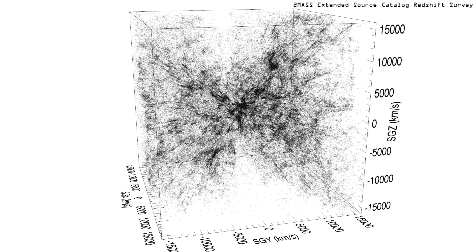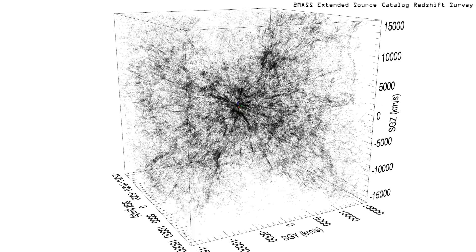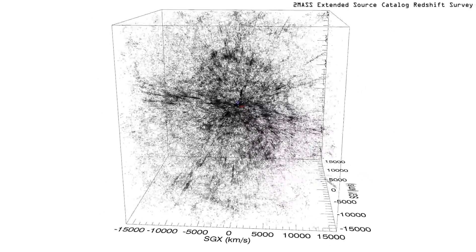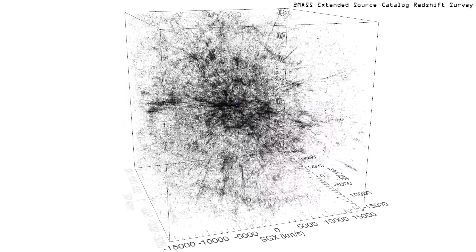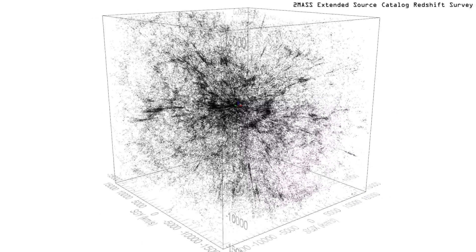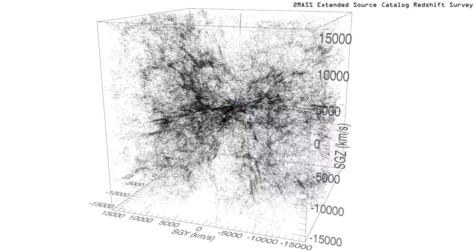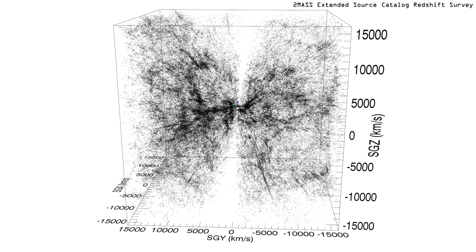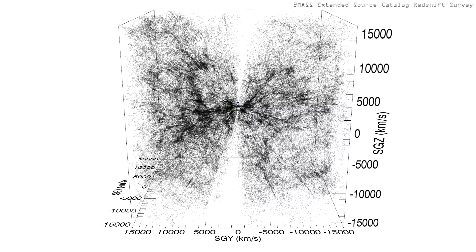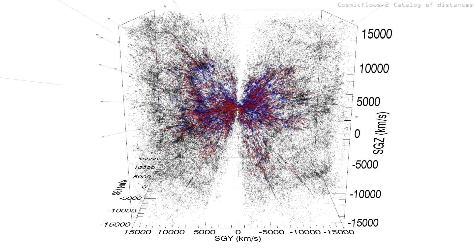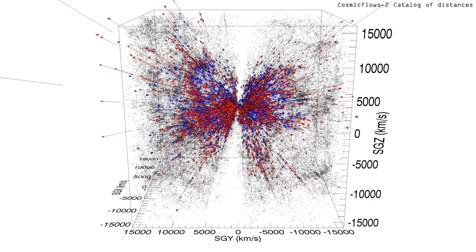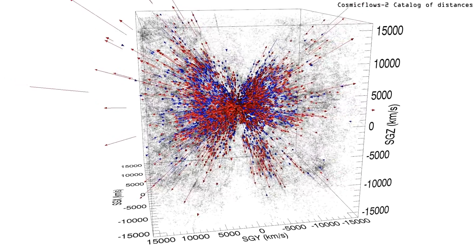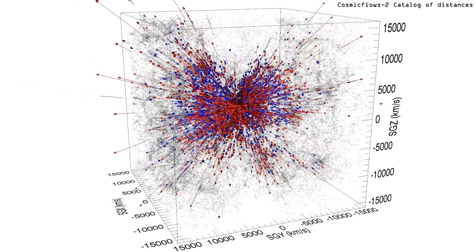Redshift space distortion causes clusters of galaxies to appear elongated towards the center of the cube. Cosmic flows' two peculiar velocity measurements are superimposed during this half rotation.